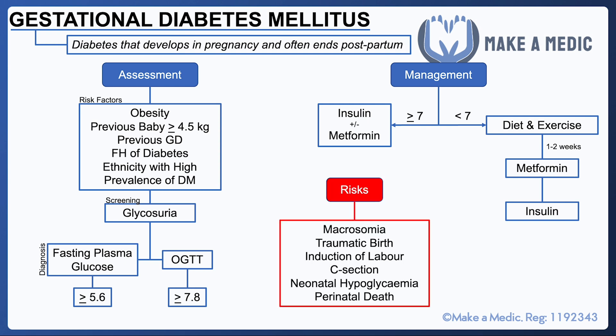The reason that GDM is important to diagnose and treat is because it's associated with a number of risks during the pregnancy. The baby is more likely to be macrosomic, which in turn increases the likelihood of a traumatic birth and needing induction of labor and c-section. There are also a few other complications like neonatal hyperglycemia and perinatal death. It is something that's relatively common and needs to be picked up early so that the glucose can be managed.